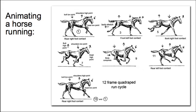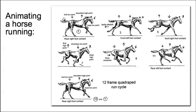You've animated a horse walking and also a trot. Now it's time to do a horse run. This is the handout and this is the cycle I'd like you to try and tackle. It's much faster than the walk or the trot. It's a 12-frame run cycle, and we're picking up the motion on the rear right foot contact, which makes transitions from walk to trot to run easier since you're always picking up from the same point.